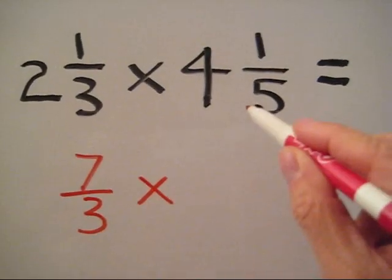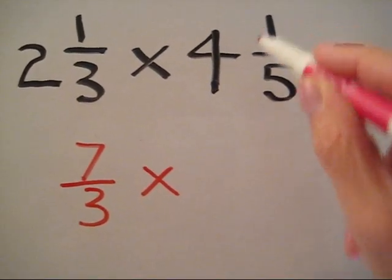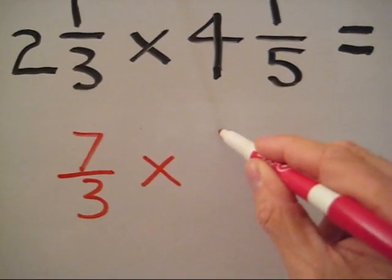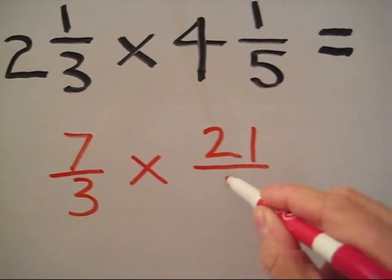Next, we go ahead and take our 5, multiply it by 4 to get 20, add 1 to get 21, and keep our denominator of 5 so we have 21 fifths.